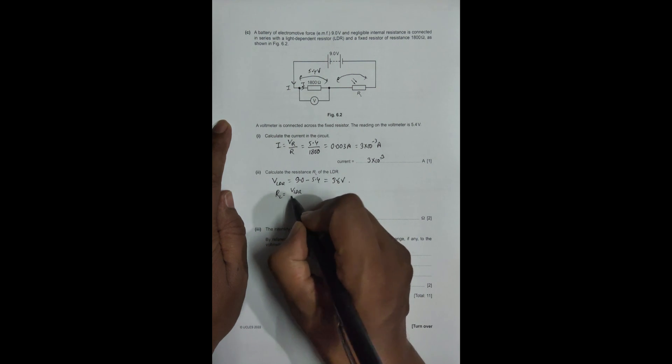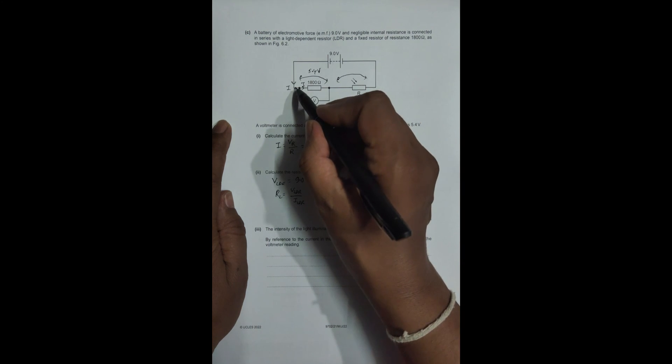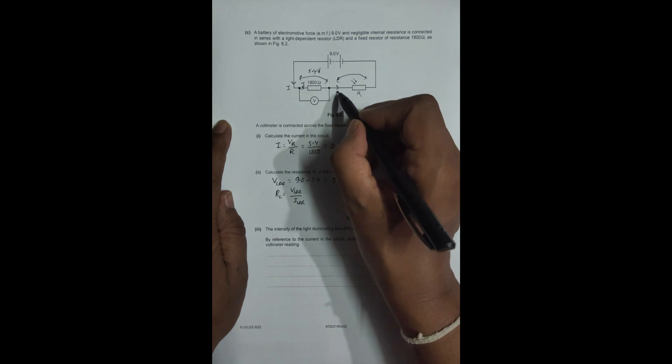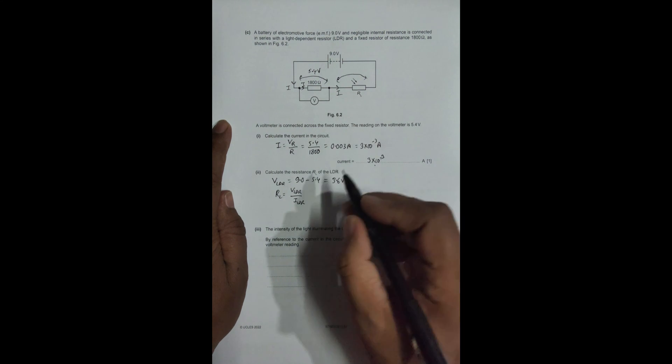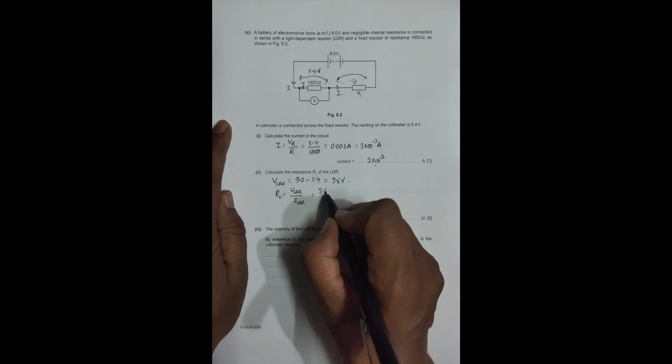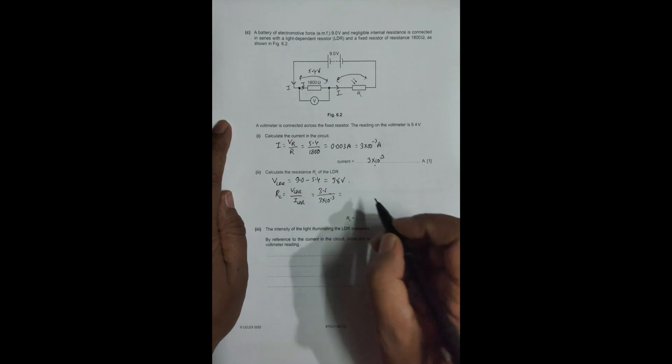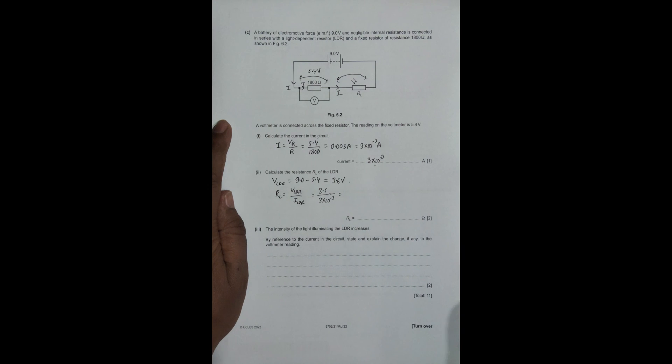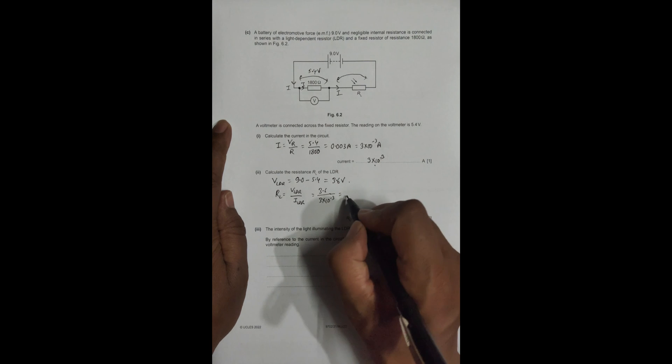So now its resistance should be RL = VLDR/current. Since the current here is also I, which equals 3×10⁻³, we have 3.6 divided by 3×10⁻³, which gives us 1200 ohm.